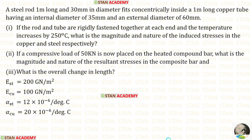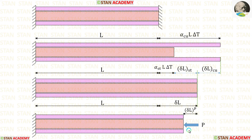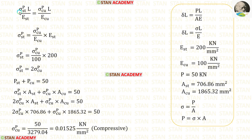Now for the second part of the question: a compressive load of 50 kN is placed on the heated compound bar. We have to find the magnitude and nature of the resultant stresses and also the overall change in length. With the compressive load applied, both materials will have the same change in length delta L_P. Let us denote the stress due to the compressive load in steel as σ_P_ST and in copper as σ_P_Cu.